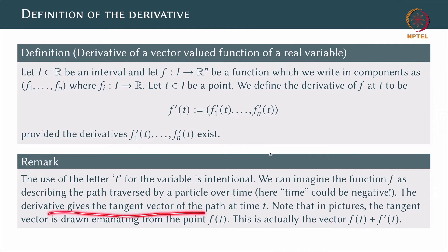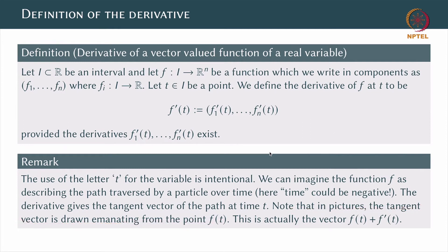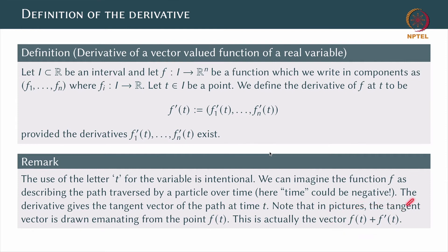The derivative gives the tangent vector of the path at time t. This should be familiar to you from a basic course on multivariable calculus. Of course, when you draw pictures, you draw the tangent vector as emanating from the point f of t — this is not actually accurate. When you write down a vector, you actually mean that the tail of the vector is at the origin. So to be 100 percent precise, the tangent vector is f of t plus f prime of t, meaning f prime of t has been translated to the point f of t.